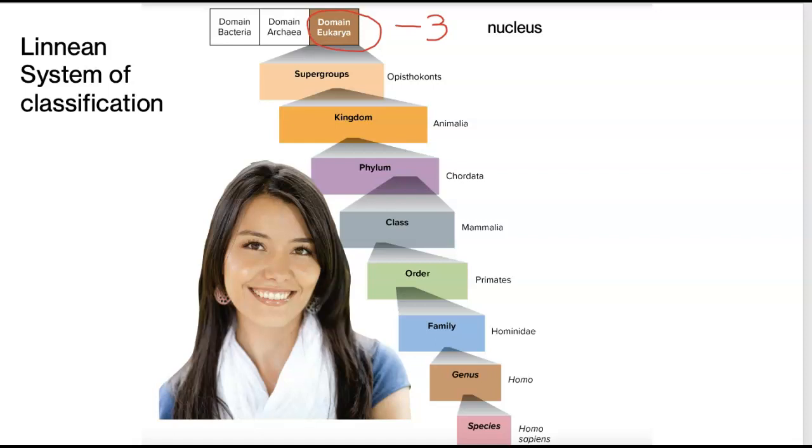So this is where we go down to the new level called supergroups. Now supergroups is a goofy one because this is a fairly, in scientific world, a fairly new organization level. Last, I'd say maybe 10 years, supergroups have been really accepted. So animals go in the supergroup obstacles.